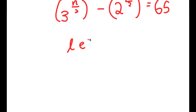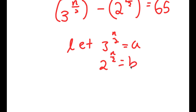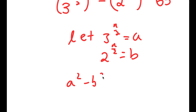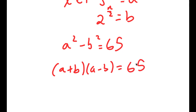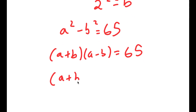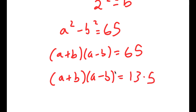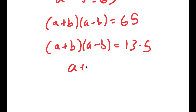Now I'm going to let 3 to the power of n over 2 equal a, and 2 to the power of n over 2 equal b. So now I have a squared minus b squared is equal to 65. And a squared minus b squared is the same thing as a plus b times a minus b. And 65 I can rewrite as 13 times 5, so I have a plus b times a minus b is equal to 13 times 5.